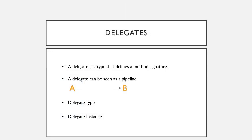A delegate is a type that defines a method signature. Instead of defining data and method implementations like we do with other types, a delegate just defines a method signature — the parameters and the return type for the particular method. A delegate can be seen as a pipeline to move from point A to point B, where point B would be the handler method that we would create.